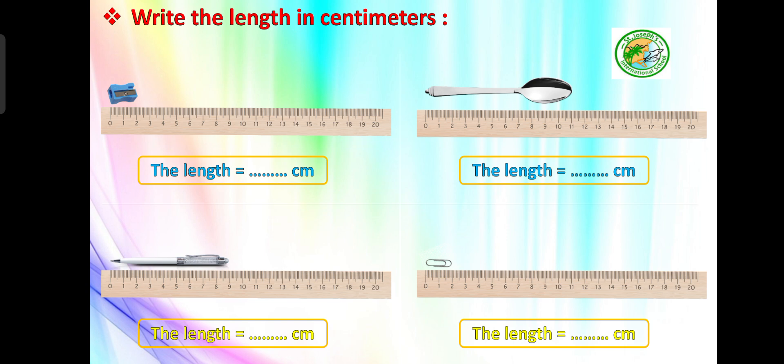We measured the length of the pencil from zero to 10. Now, the first picture shows a sharpener. We want to find the length of the sharpener — from zero to what? Can you find the measurement of the sharpener from zero to what number?